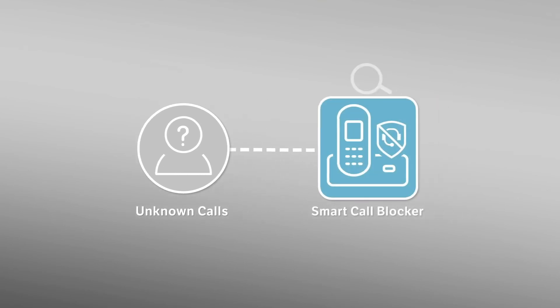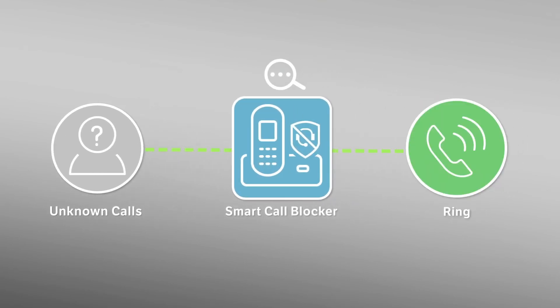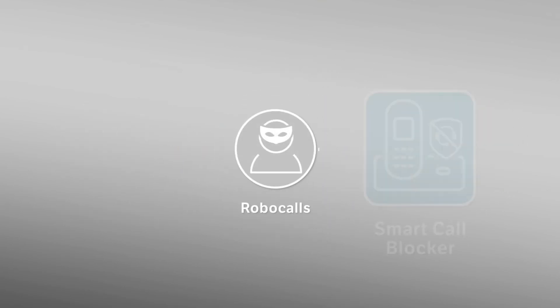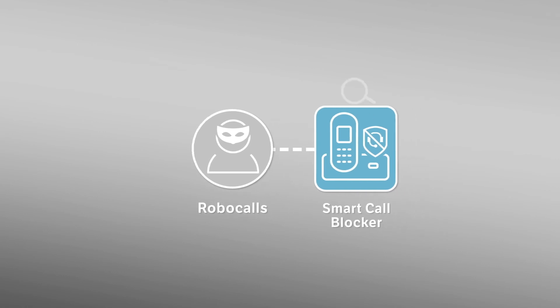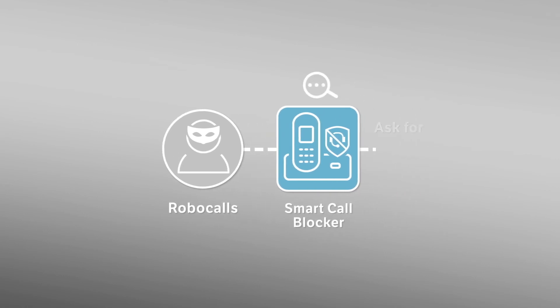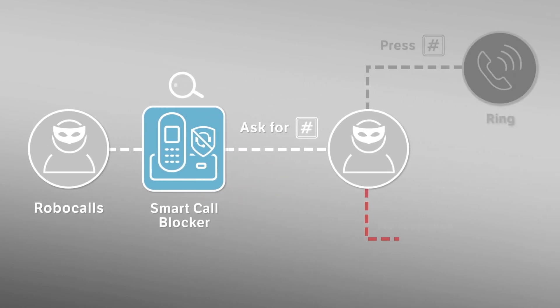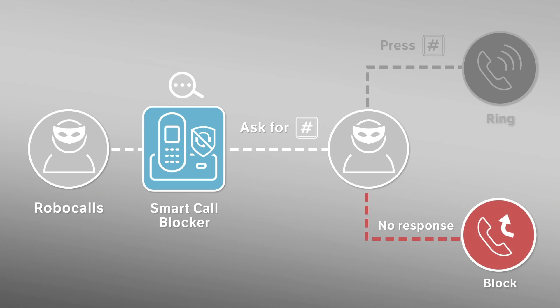Now, the callers who respond to the Smart Call Blocker by pressing the pound key will get through. Robocalls, on the other hand, use pre-recorded messages and can't respond by pressing the pound key. They will be blocked by the Smart Call Blocker.